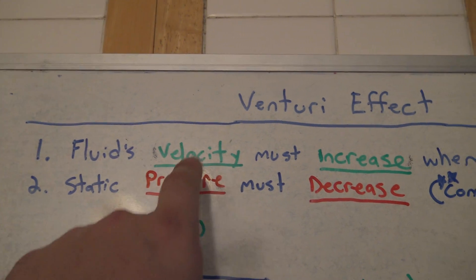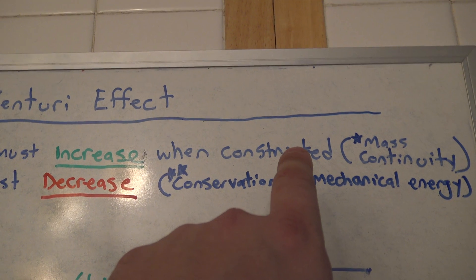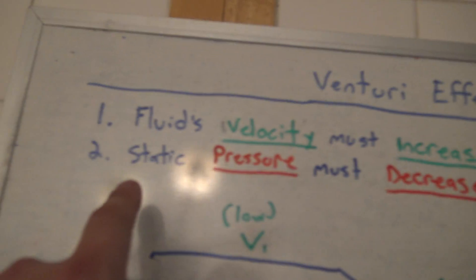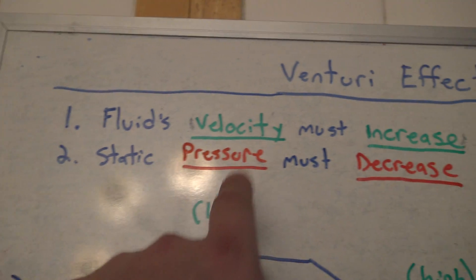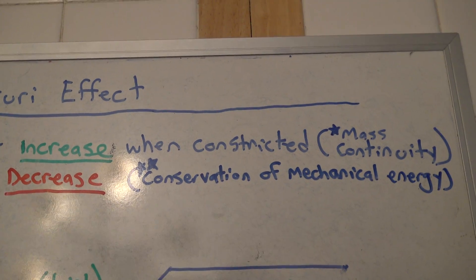First, the fluid's velocity must increase when it's constricted—that's mass continuity. And then second, when that happens, the static pressure must decrease, and that's the conservation of mechanical energy.